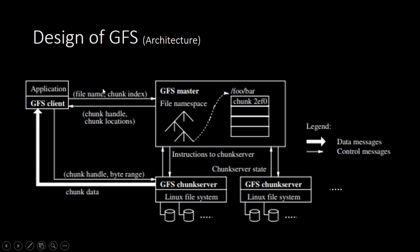That eliminates a lot of the overhead created by interacting with the master each time you read or write the same piece of information, which would otherwise be more costly and time-consuming. Once the information is cached within the client, all reads and writes are done locally within the chunk server. That's how this diagram works, and that's a quick run-through of what the Google File System looks like.